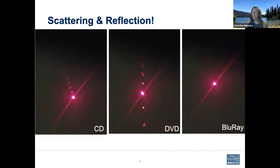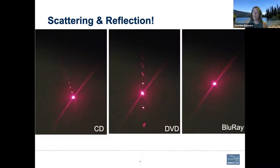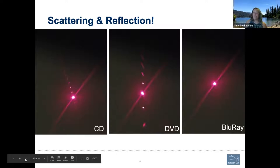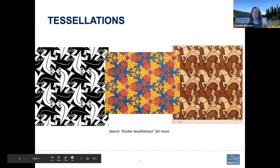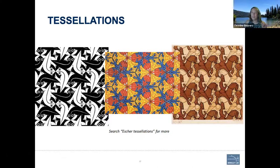Blu-rays are actually called Blu-rays because you need a blue laser to read them, and blue light has a shorter wavelength. The features have gotten so much smaller on a Blu-ray that the longer red wavelength light can't scatter off those features. So what we've learned is that to look at very small things, you need light with a wavelength that is on a similar scale. Now we're going to take a trip into tessellations, which seems like a crazy divergent thing, but it actually will make sense — to describe crystals and scattering off of them, we need to talk about tessellations.